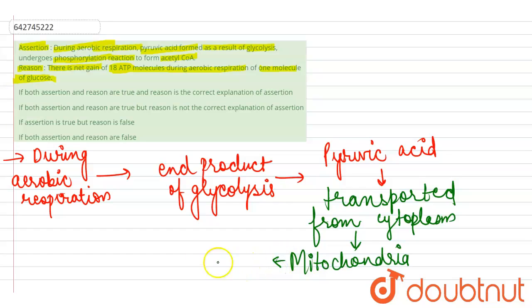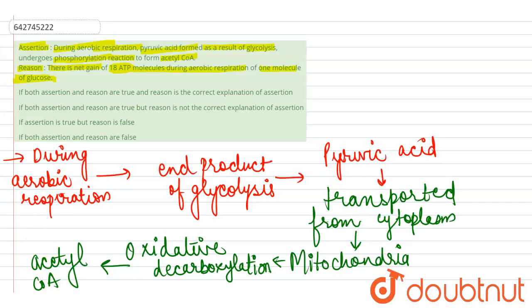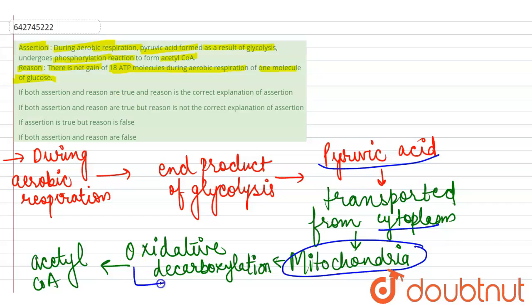In the mitochondria, pyruvic acid undergoes oxidative decarboxylation reaction, and as a result of this reaction, acetyl coenzyme A is formed. So pyruvic acid from the cytoplasm is transported into the mitochondria, where it undergoes oxidative decarboxylation to form acetyl coenzyme A.